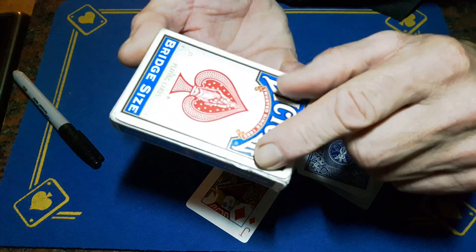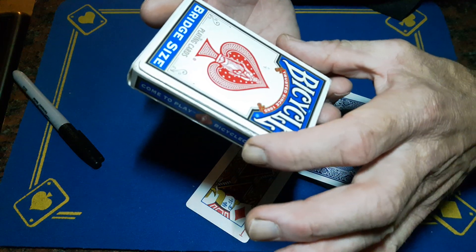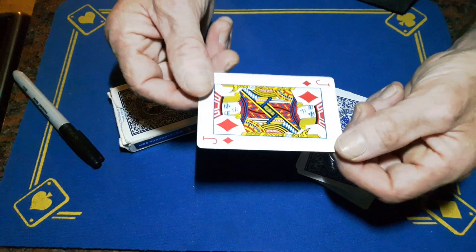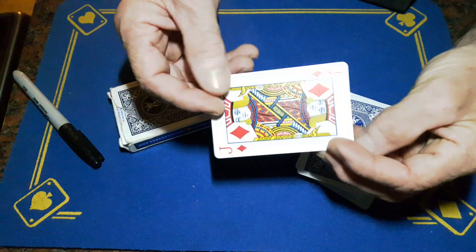Now you can see a little bit sticking out here, so make sure they're all squared up. But that is a great way of doing that same trick but getting your spectator to sign the card.